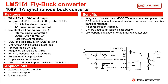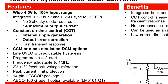The LM5161 is a buck converter that has an input voltage range of 4.5 to 100 volts. It can output up to 1 amp maximum current and uses a constant on-time control architecture. It also has two operating modes: continuous conduction mode or discontinuous conduction mode, which enables the user to optimize between response and efficiency.